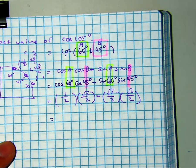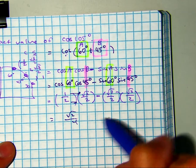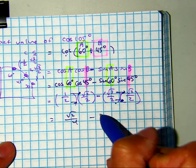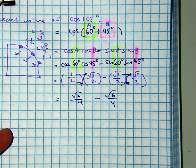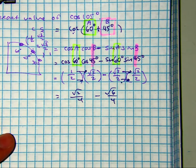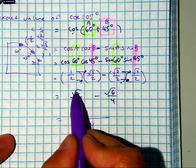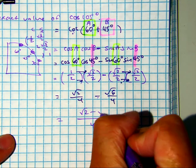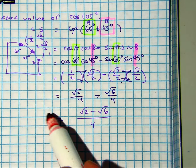So then here I can just multiply across. I get radical 2 over 4 minus radical 6 over 4. Class, do I have a common denominator? Yes. What is it? Radical 2 minus radical 6 are not like terms, so I can keep it as it is. And we found the exact value of cosine of 105 degrees.